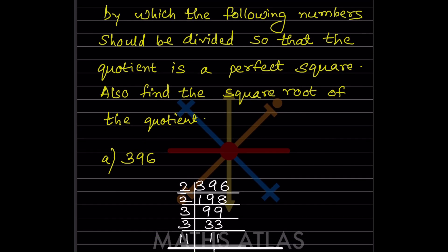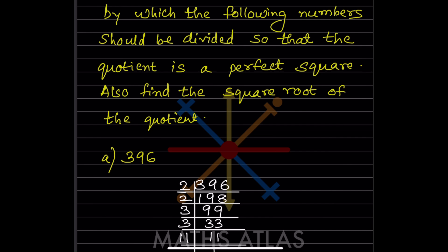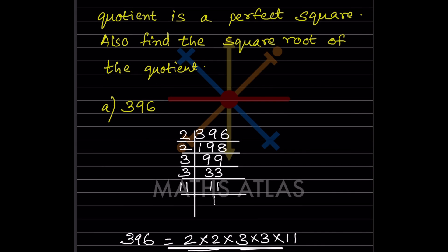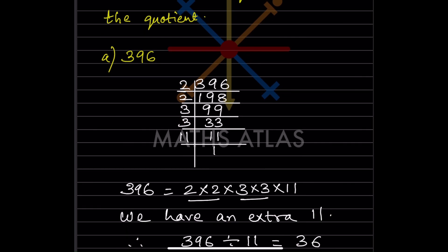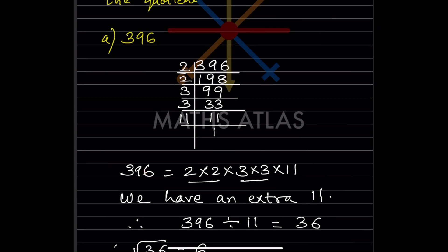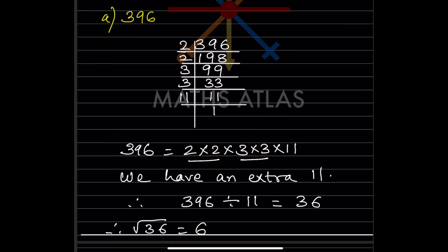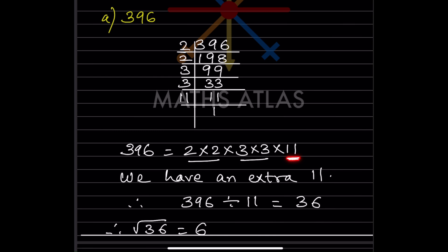Also find the square root of the quotient. We have the number 396. We'll find the prime factors of 396 with the help of prime factorization. The factors are 2, 2, 3, 3, and 11. So 396 = 2 × 2 × 3 × 3 × 11. We are going to make pairs, but 11 is unpaired — it is extra.